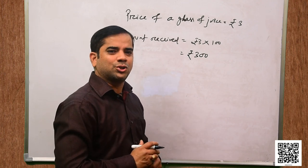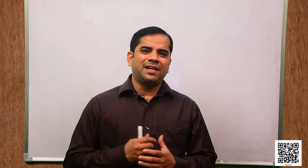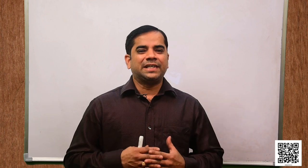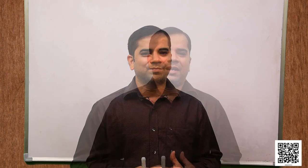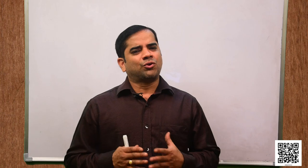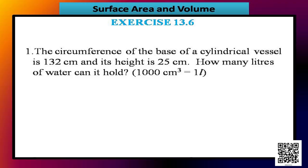Hope you understand the solution. Students, let us now discuss exercise 13.6. Question 1: The circumference of the base of a cylindrical vessel is 132 centimeter and its height is 25 centimeter. How many liters of water can it hold? Take 1000 centimeter cube as 1 liter.